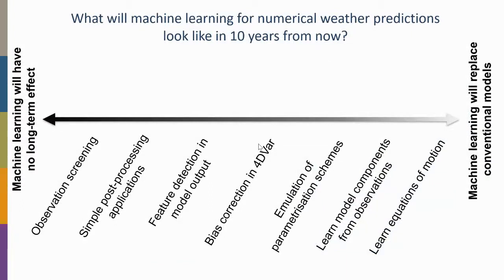What will machine learning look like in numerical weather prediction 10 years from now? There's a scale ranging from 'machine learning will have no long-term effect and business will be back as usual' all the way to 'machine learning will replace conventional models entirely.' Some very senior experts argue for the far left; others argue for the far right. The uncertainty range is still very large — we simply don't know yet.